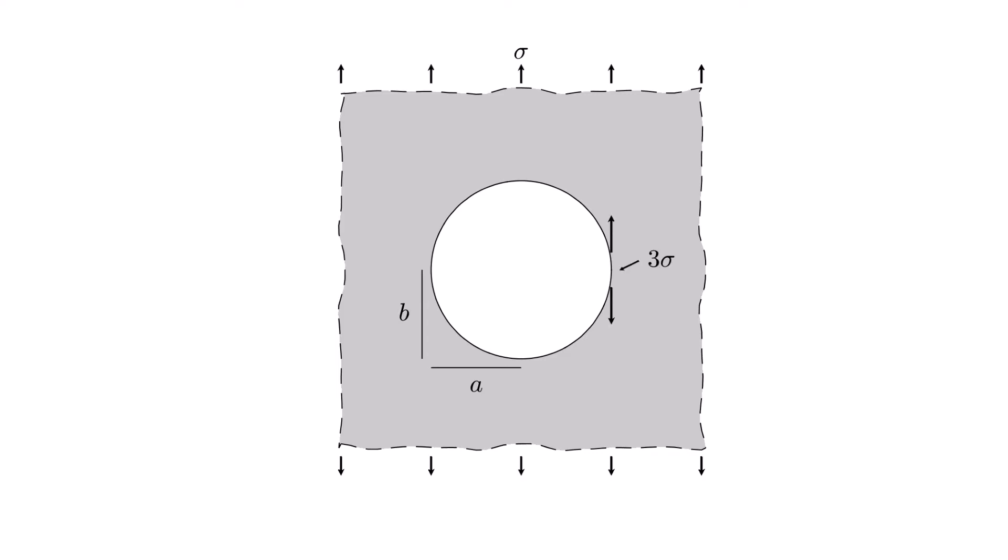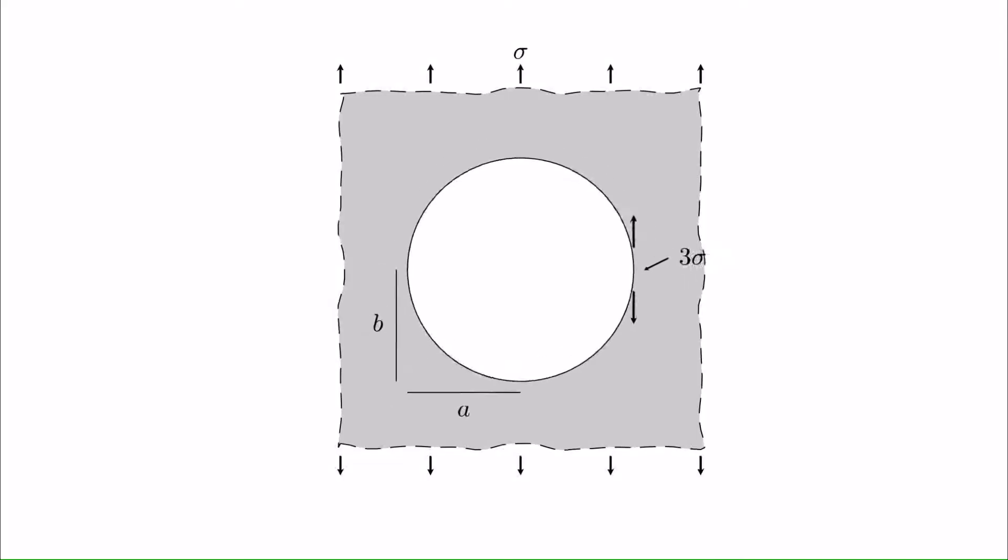If we apply a far-field stress, sigma, along the vertical axis, we see the following stress concentration on the wall of the hole. This is three times the applied stress. This solution was first derived in 1898 by Ernst Gustav Kirsch. If the size of the hole is changed, the stress concentration doesn't change. This concentration is also independent of the elastic constants.